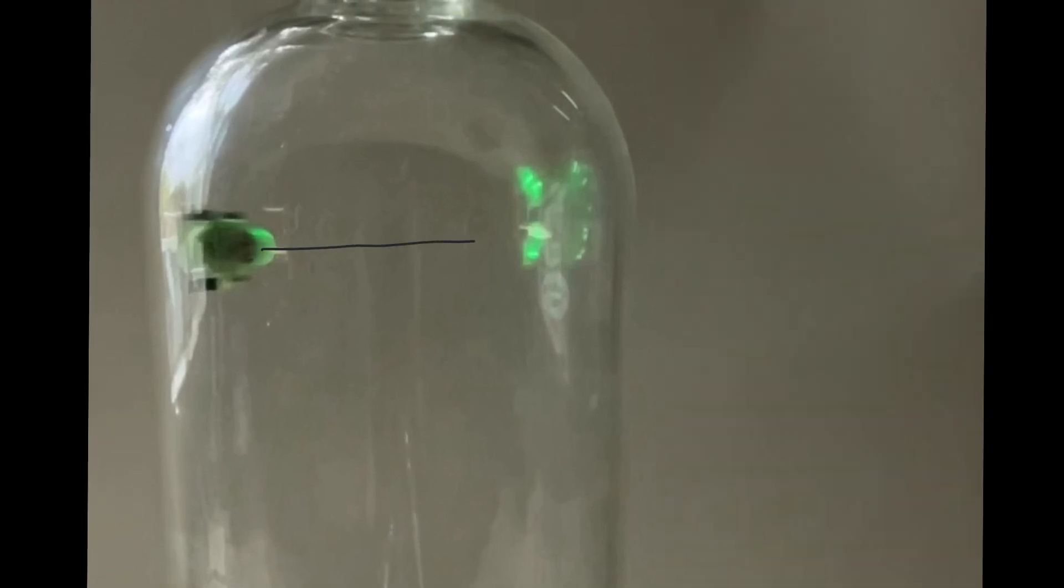First of all, let's draw the normal contact force acting towards the centre of the circle. There must be the weight force acting down, which leaves the question of what force is acting up to stop the car sliding down the side, and that must be friction.